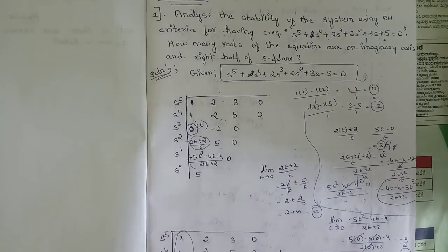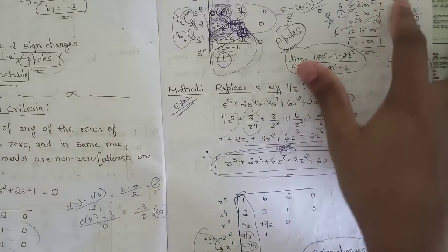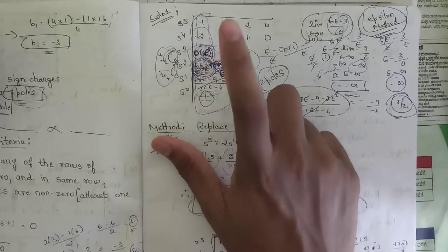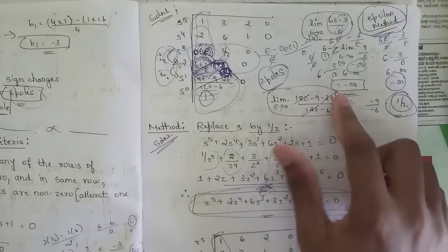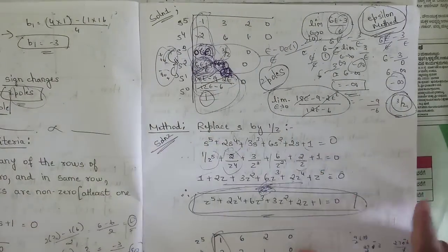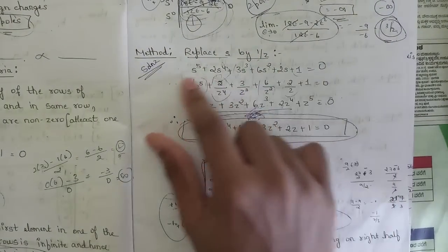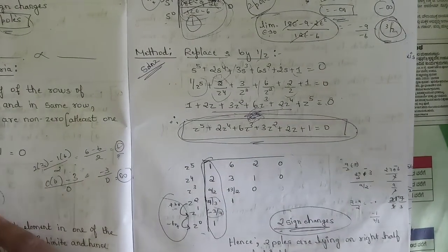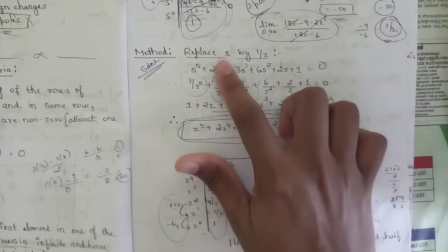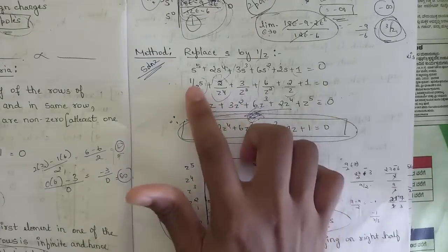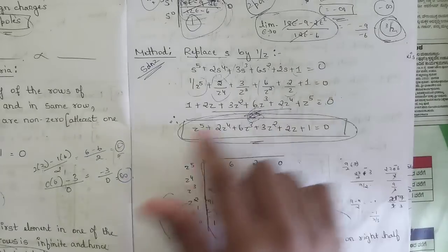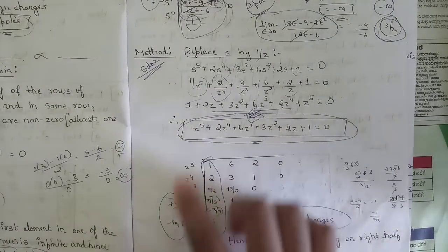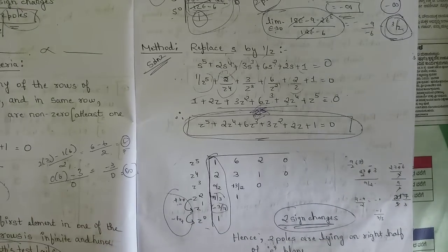Whenever any first-column term is zero, we have two methods. The first is the epsilon method: replace the zero with epsilon, continue solving, and wherever epsilon appears, take the limit as epsilon approaches zero, then rewrite the Routh array and check for sign changes. The second method is to replace s with 1/z in the characteristic equation, rewrite the equation in terms of z from highest to lowest degree, then apply the Routh array again — this avoids getting zeros in the first column.